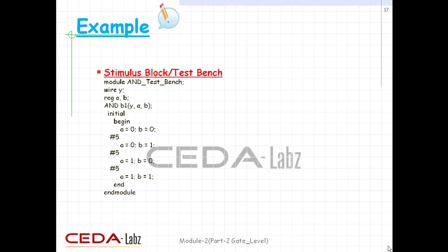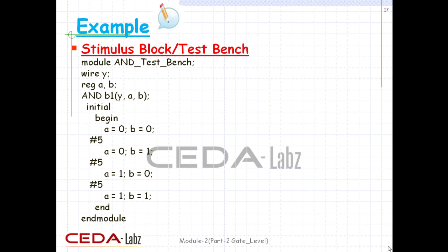Here is the testbench for the AND gate module. We define a module and module name. No port list is needed here as we are instantiating the design block and stimulus block. Output is defined as wire and inputs as register. The design block is instantiated, and within the initial and begin block, we mention all possible input conditions to test the design. Finally, the begin block is terminated with the end keyword and the module with the end module keyword.